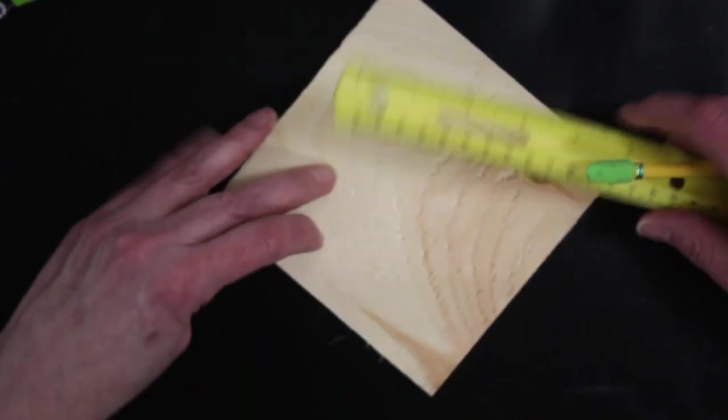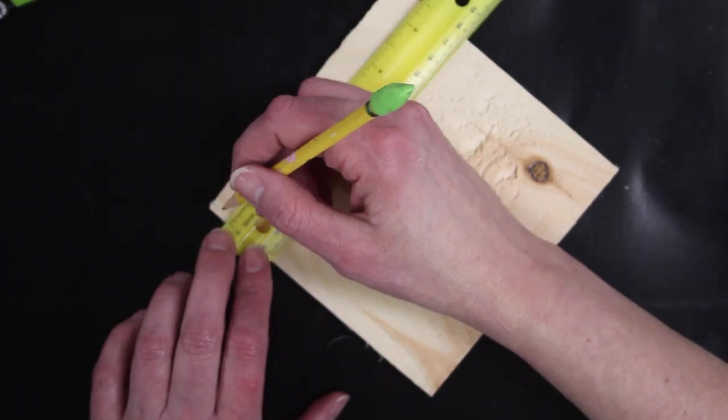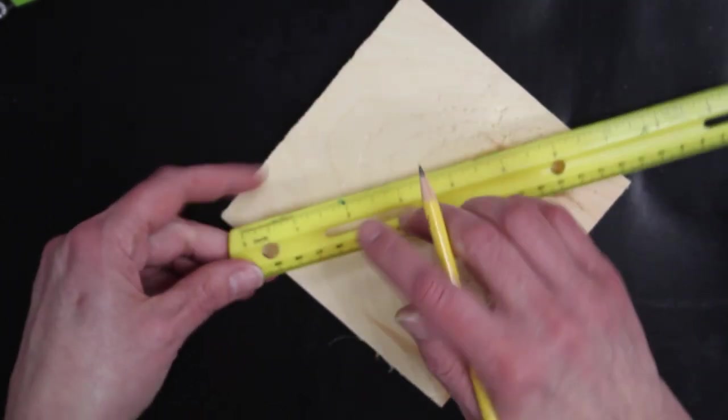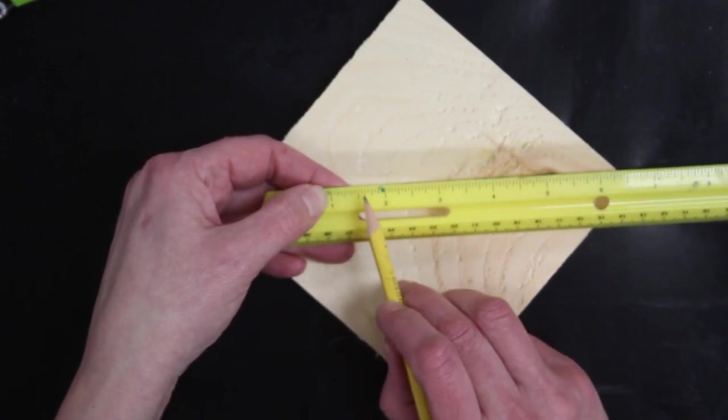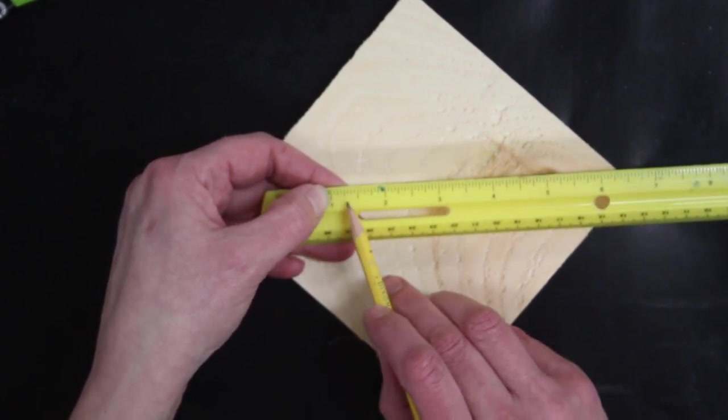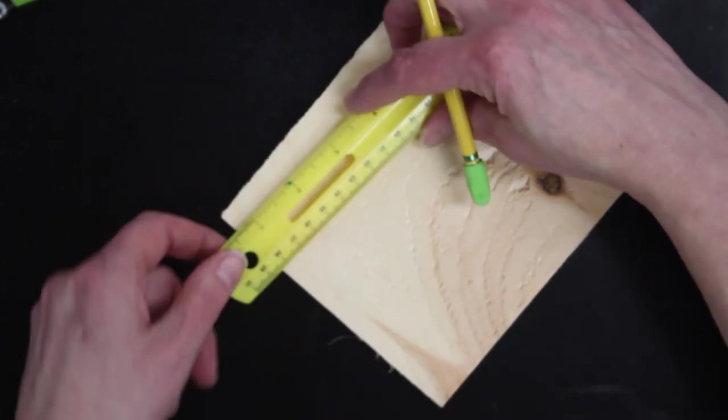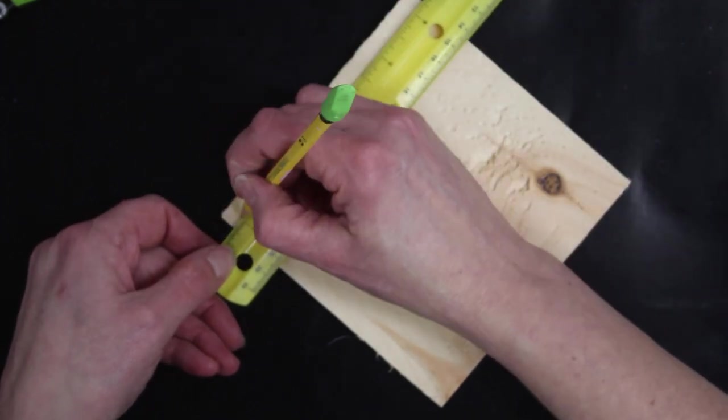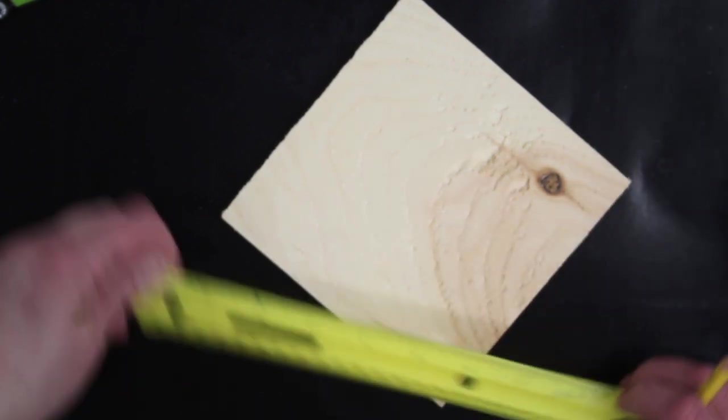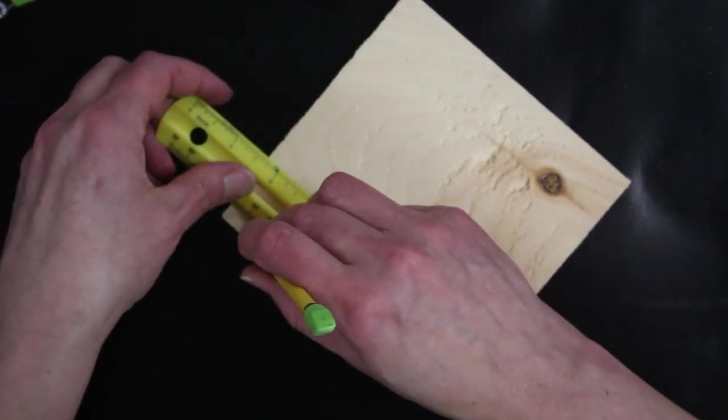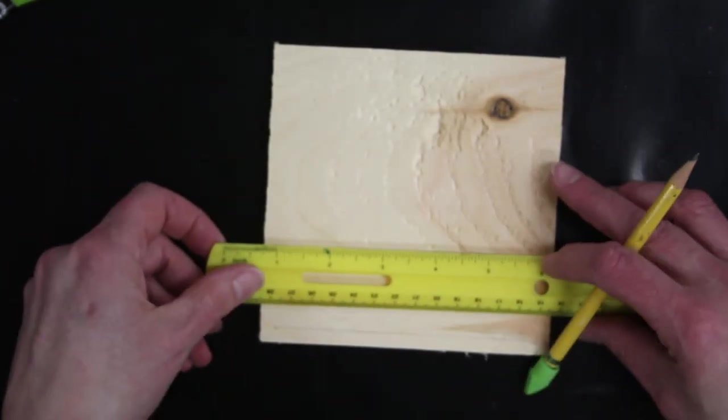We're going to come up a quarter inch from the bottom. When you have an inch, between the inches you have four lines, four spaces. Those are quarter inch. So you got one quarter, half, three quarter, and two. Come up just a quarter inch on all sides and draw a line.